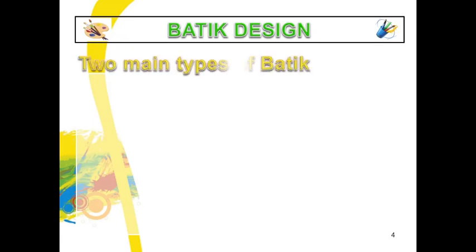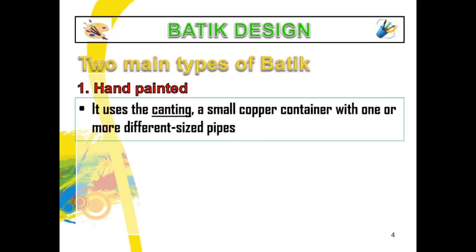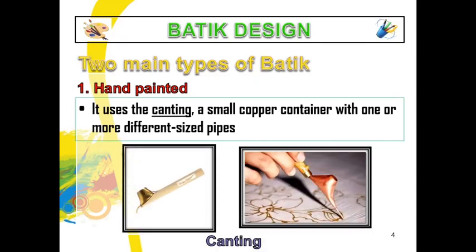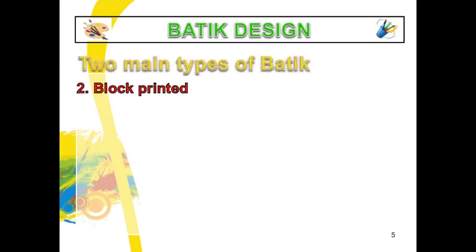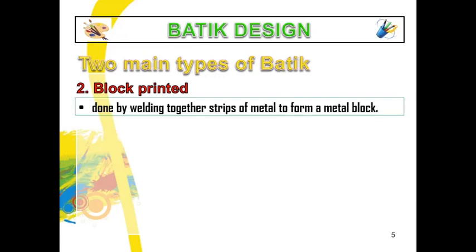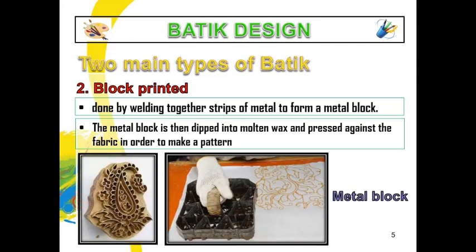For batik design, we have two main types. The first one is hand-painted, which uses a small copper container called a canting, into which the hot wax is poured — imagine it like a marker or ball pen that has a different tip depending on the design. Another type of batik design is block printed, done by welding together strips of metal to form a metal block. The metal block is then dipped into molten wax and pressed against the fabric to make a pattern.